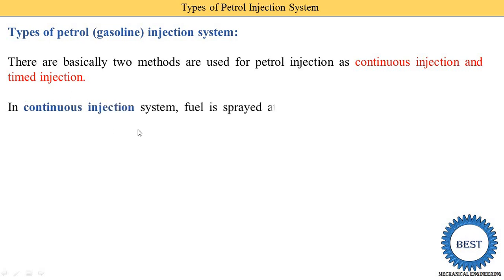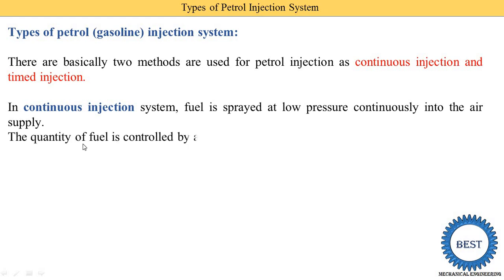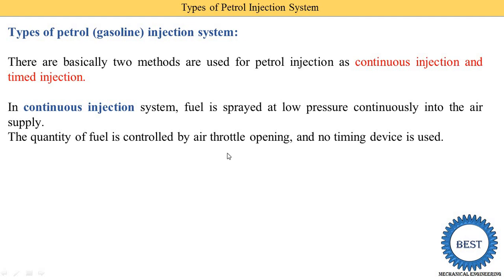In a continuous injection system, fuel is sprayed at low pressure continuously into the air supply. The quantity of fuel is controlled by the air throttle opening — no timing device is used. This throttle is controlled by the accelerator of the vehicle.